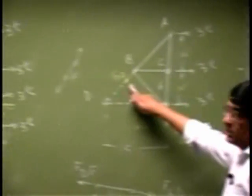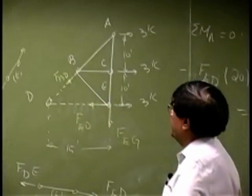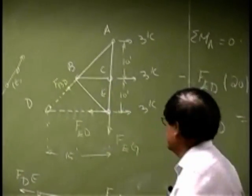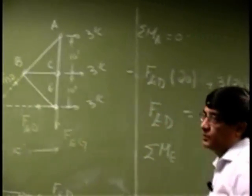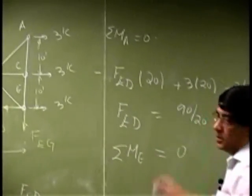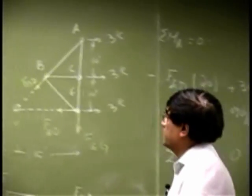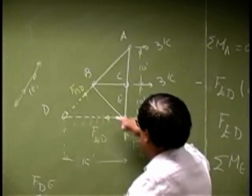Then you need this one. And if I choose point E, that means if you sum the moments about point E, that should also go to 0.